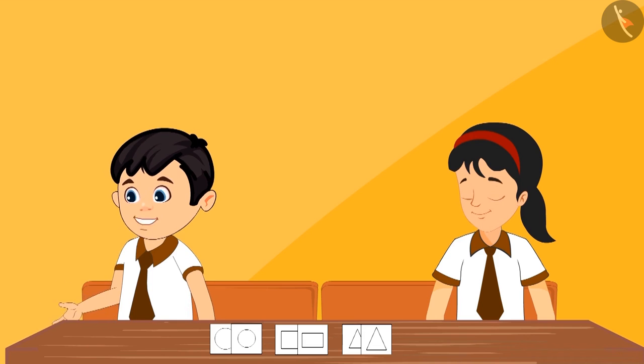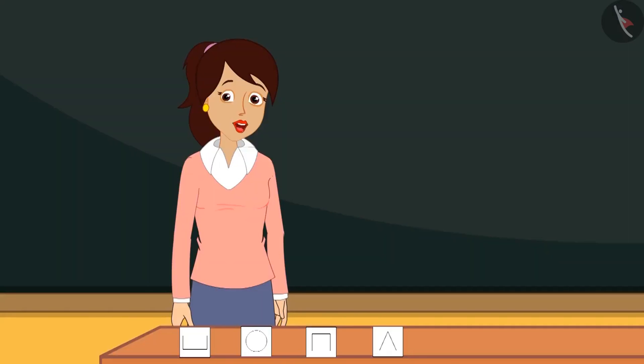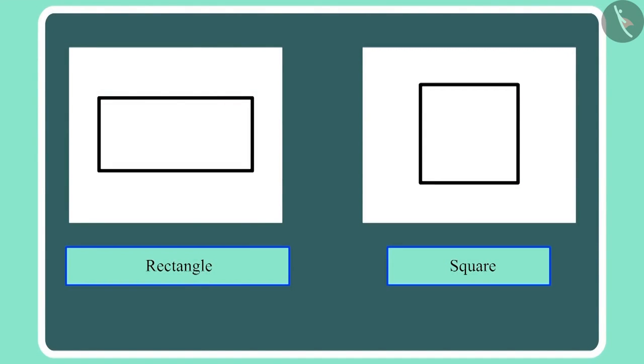Ma'am, what is the difference between square and rectangle? Both these shapes are made of four lines. This shape is made of four lines of the same length. That's why we call it a square.